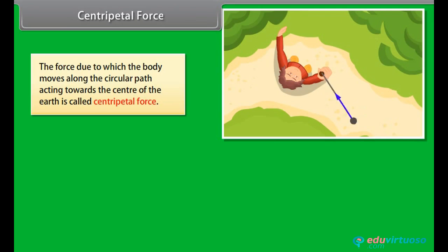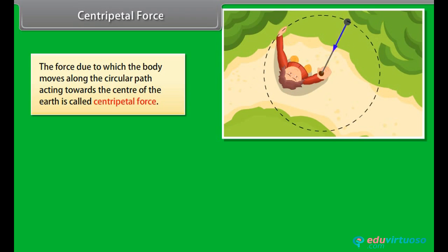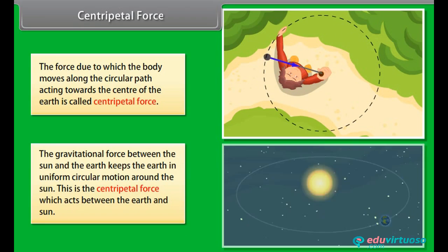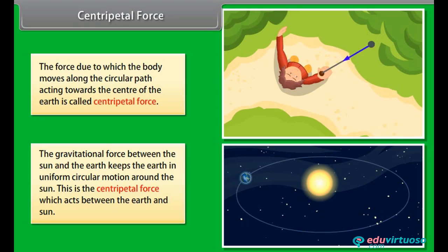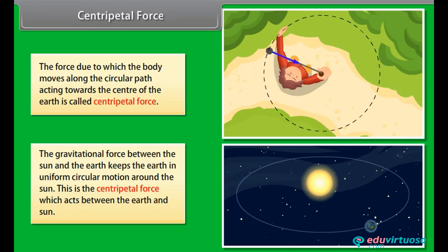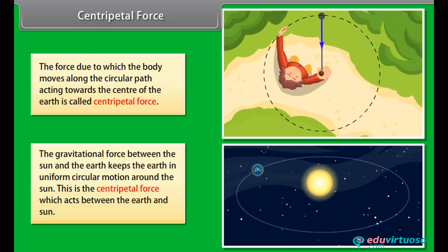Centripetal force: the force due to which a body moves along a circular path, acting towards the centre, is called centripetal force. The gravitational force between the Sun and the earth keeps the earth in uniform circular motion around the Sun. This is the centripetal force which acts between the earth and the Sun.